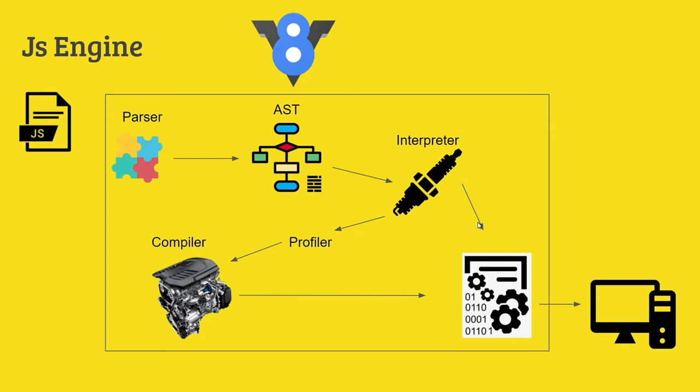Actually, the V8 engine converts to bytecode, which is technically a type of machine code that is human readable. This is an intermediate step.